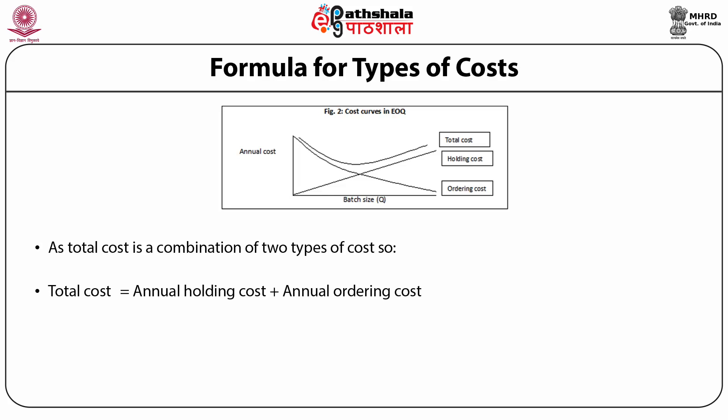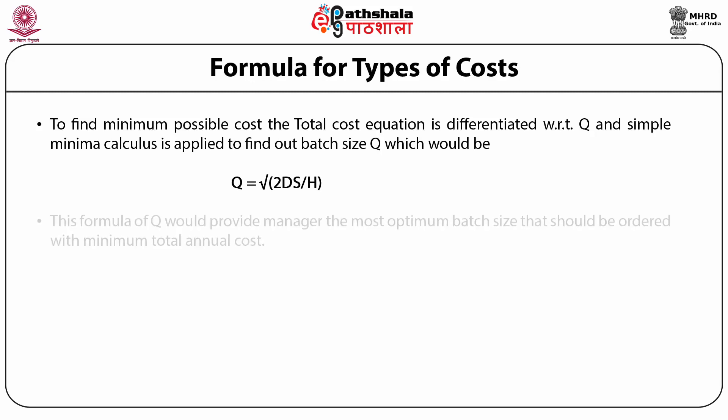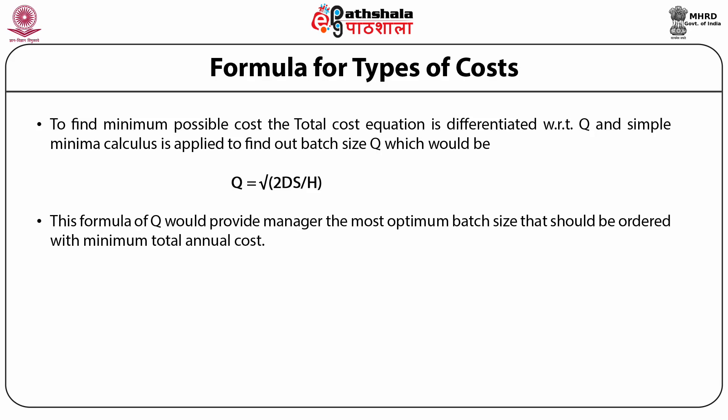Total cost is a combination of two types of cost: Total Cost = annual holding cost + annual ordering cost = (Q/2) × H + (D/Q) × S. To find the minimum possible cost, the equation is differentiated with respect to Q, and simple minima calculus is applied to find the optimum batch size: Q = √(2DS/H). This formula provides the manager the most optimum batch size to order with minimum total annual cost.